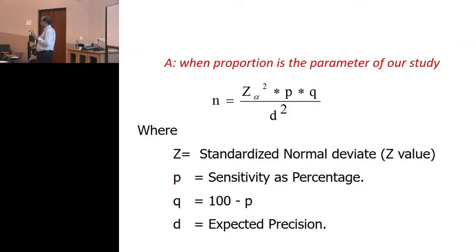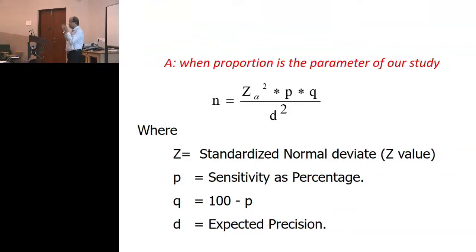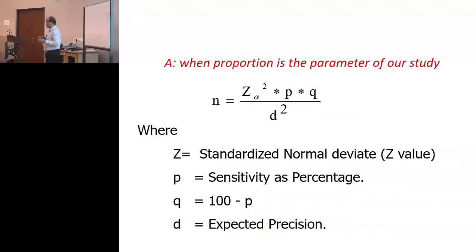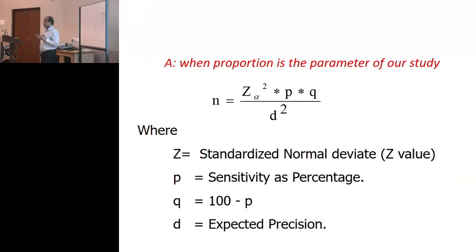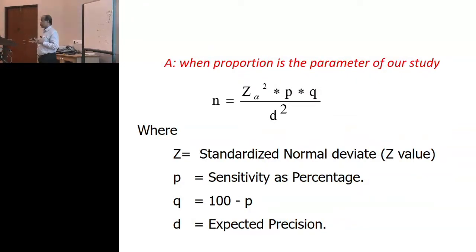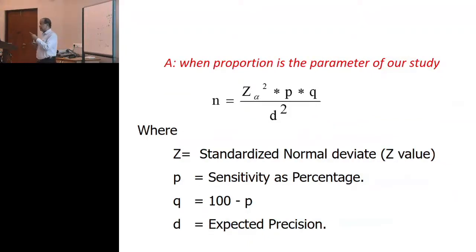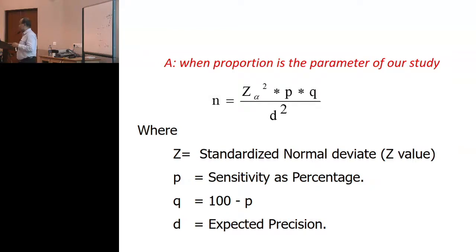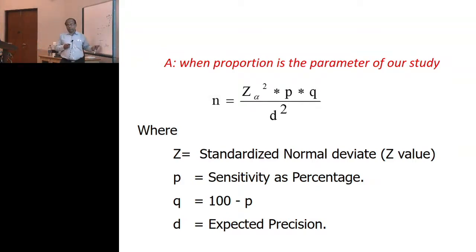So you just understand how precisely you are estimating. When you say sample size for a diagnostic test, you need to know there are cases and there are controls. Are you going to have 50-50? The case control study design is very appropriate. Statistics like Kappa are unbiased when the prevalence is 40-60%.